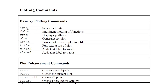Plotting commands: axis sets axis limits. fplot intelligently plots a function. grid turns grid lines on or off. plot plots variables — for example, plot(x, y). print prints or saves a plot to a file. title assigns a title to a plot. xlabel and ylabel add labels to the x and y axes.